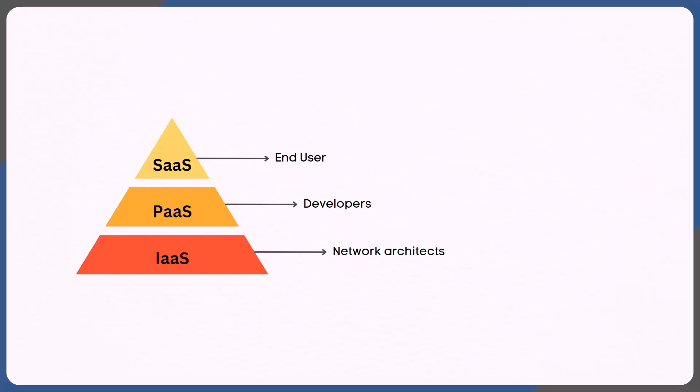The typical users of each layer would be like so. For SaaS, it's going to be the end user who uses the application, typically over a browser. For PaaS, the typical user would be developers who are not bothered about creation of infrastructure or the platform, but are more focused on developing and deploying the application. And for IaaS, it's going to be network architects who are familiar with creating infrastructure solutions.